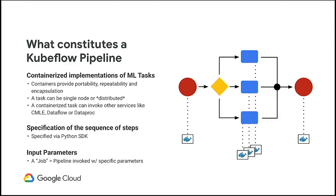Each step of the workflow can be very heterogeneous — it can run on different types of hardware, be a simple Python script, run in a distributed fashion, be an Apache Spark job, or a distributed model training job. Steps of the workflow can also call out to other Google services. The other key aspect is the definition of the sequence or topology of the workflow — the sequence in which steps should run and how data flows between these steps.